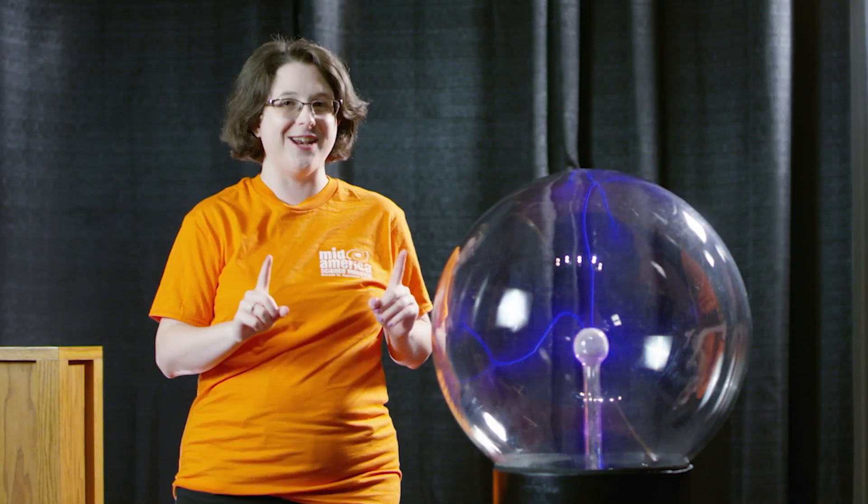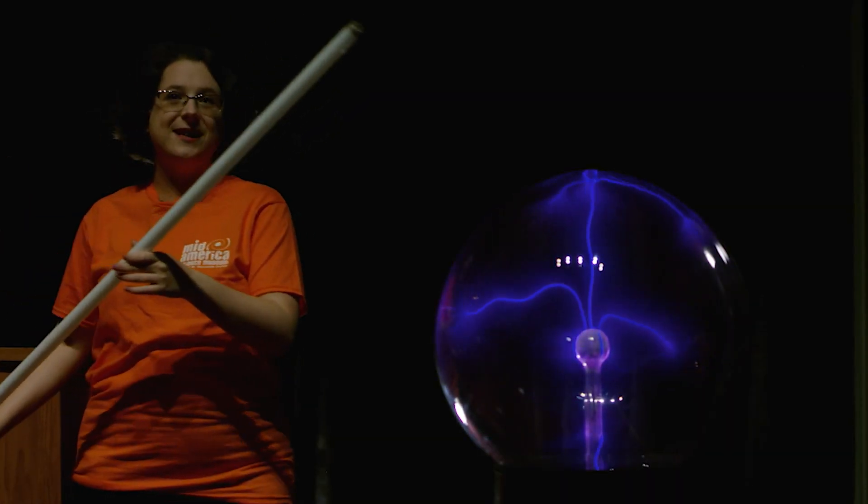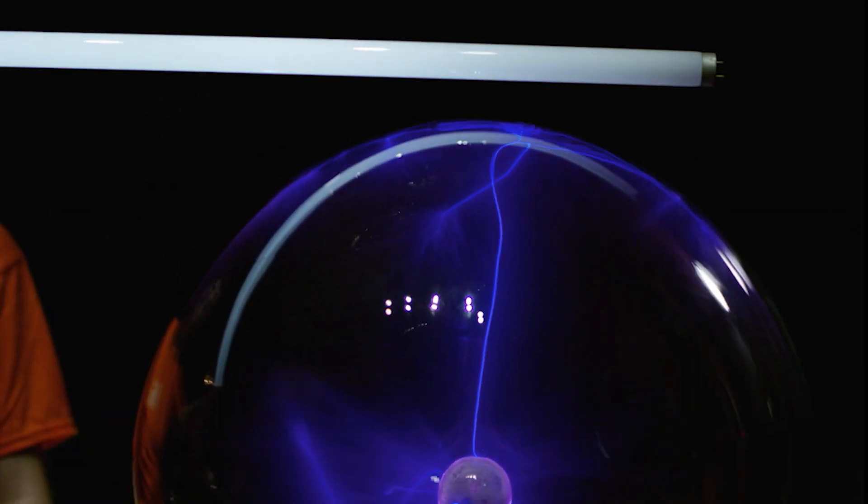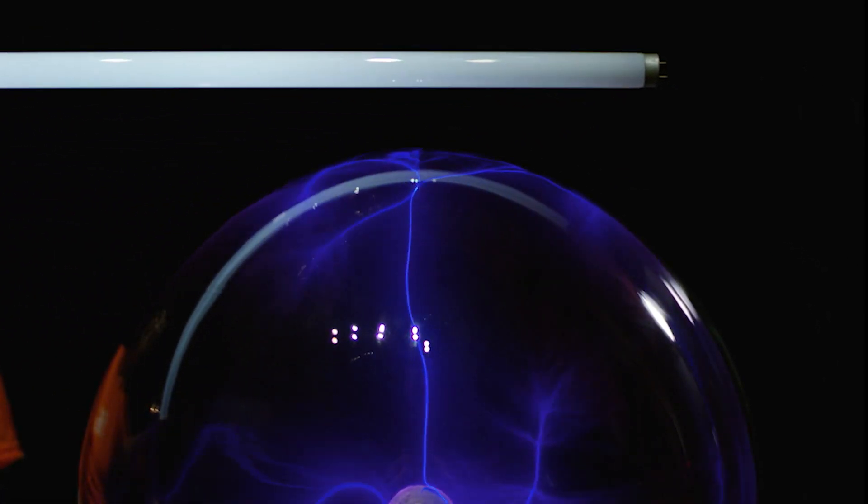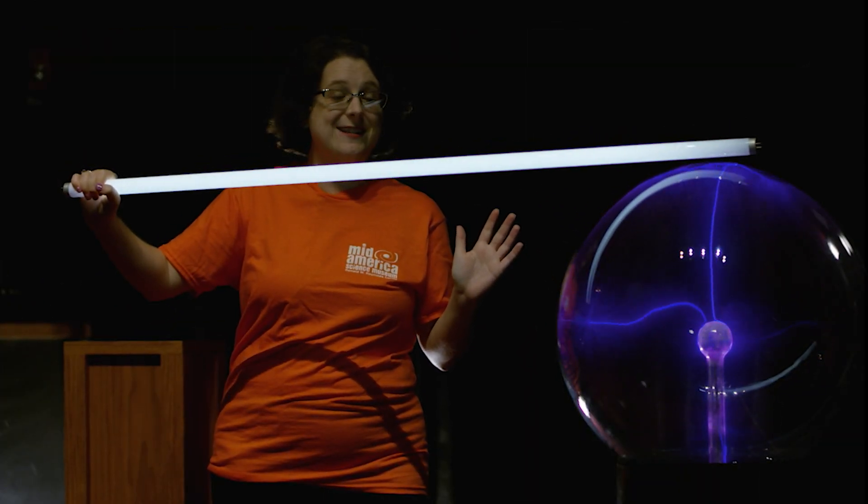Did you know electricity can travel through the air wirelessly? Check this out. We just need the lights off and a fluorescent light bulb. Whoa! The electricity traveling from the plasma ball is actually going through the air and causing the gas inside the fluorescent light bulb to glow. Now that's some bright science.